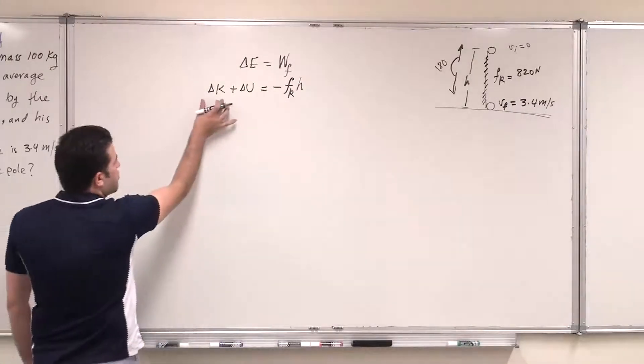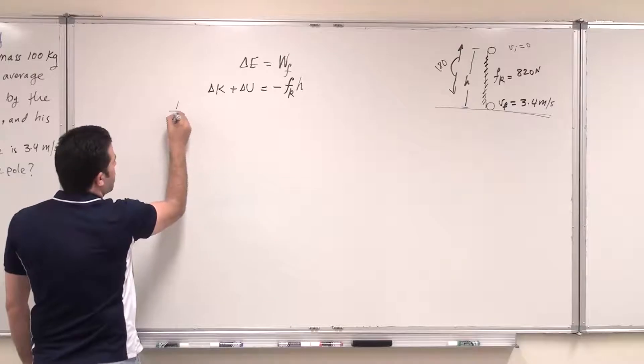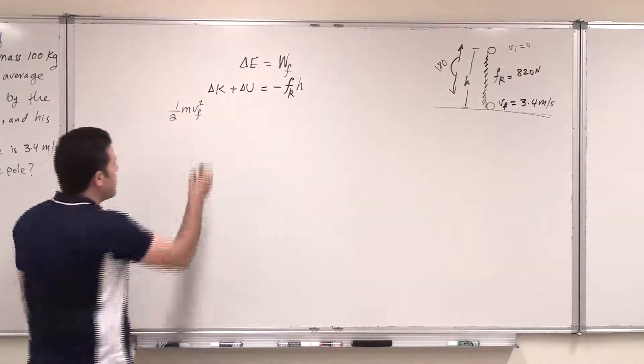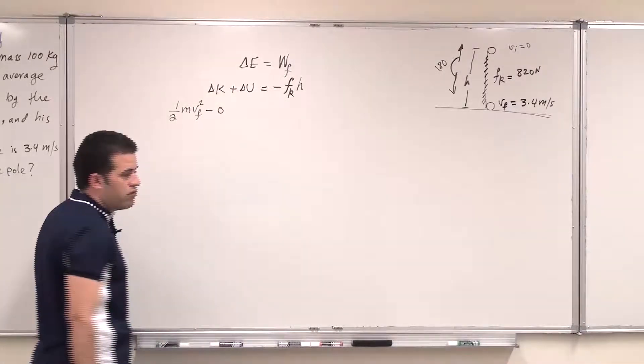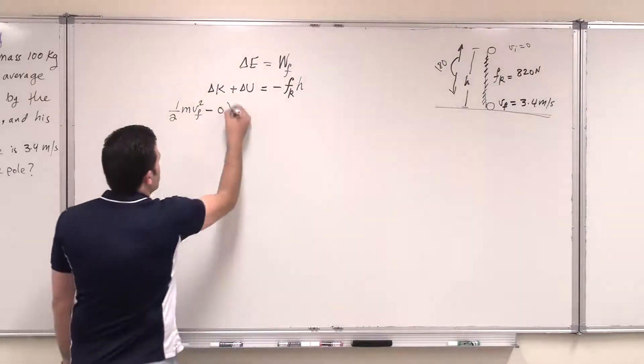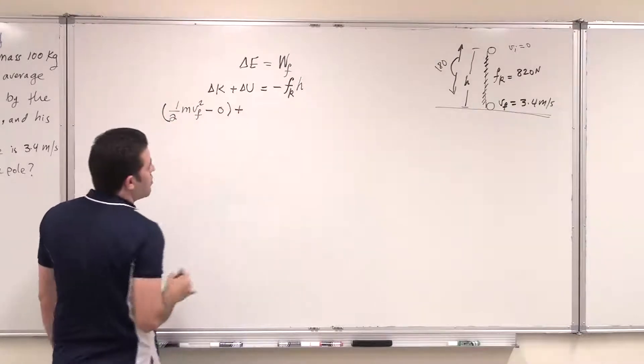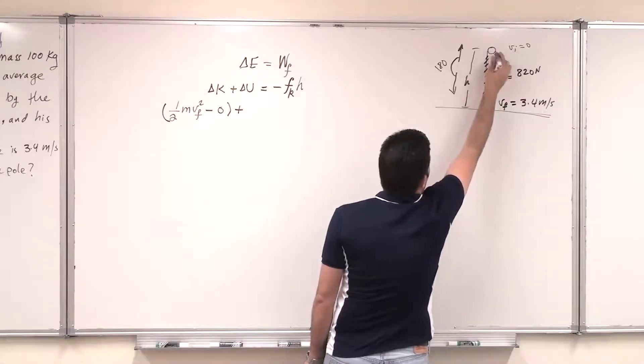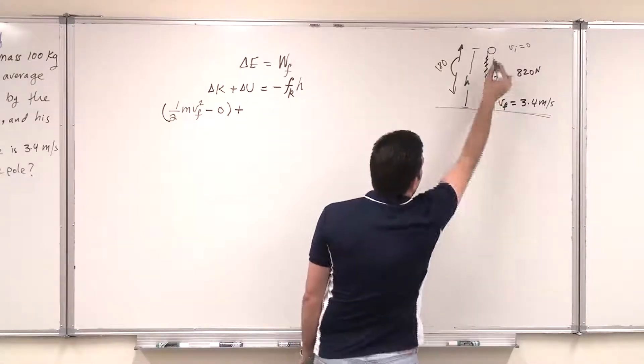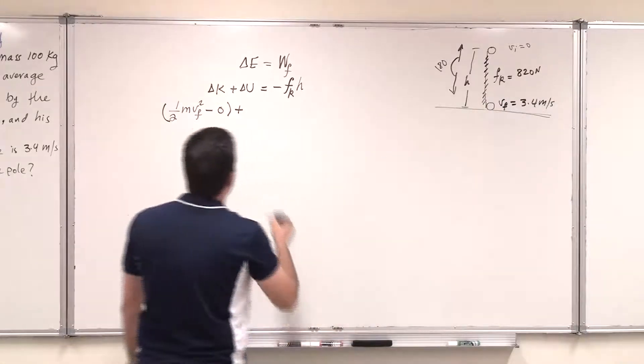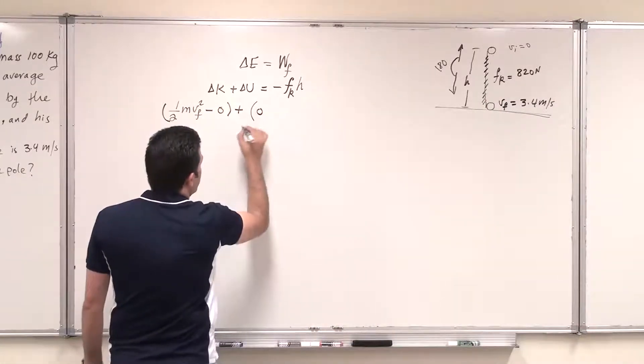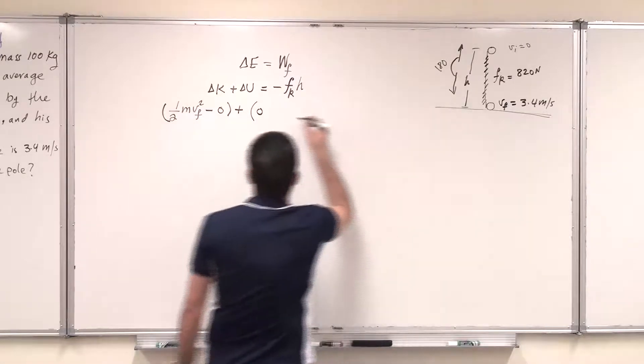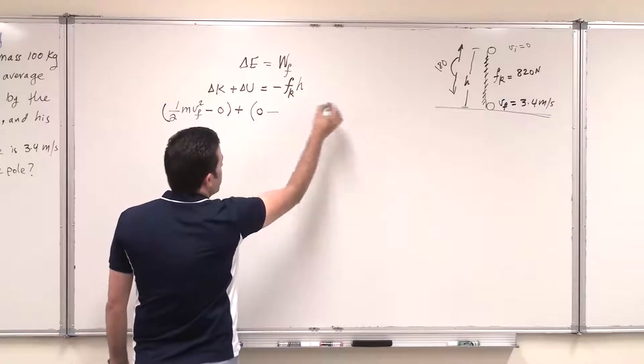And this change in kinetic energy equals half m v final squared minus, of course, zero, because the initial velocity is zero. So this is change in kinetic energy plus change in potential energy. So if I start from here, if the firefighter starts from here, this is my reference. So final will be zero, mgh equals zero, so h equals zero at the bottom here, where initial will be mgh. This is the gravitational potential energy at the beginning of this slide,